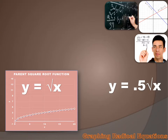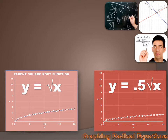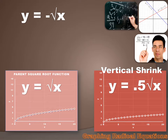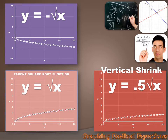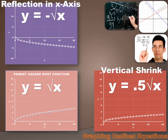What about y equals 0.5 times the square root of x? Now we're not stretching our parent function — we're shrinking it. All our y values are going to be half what they were in the parent square root function. It's going to show vertical shrink. And y equals minus the square root of x: we're just taking each y value and making it negative, driving the entire curve below the x-axis so all y values are negative. That's a reflection in the x-axis.